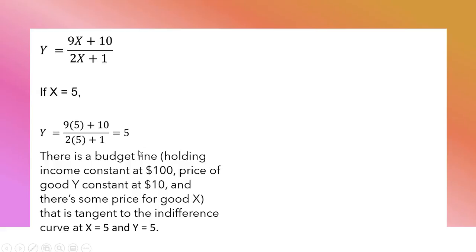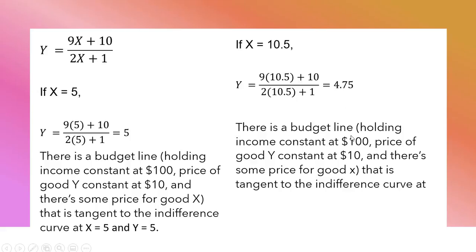Let's implicitly vary the price of good X. Now if X equals 10.5, so the price had to fall, consumers are buying more of good X. Plugging that 10.5 into the price expansion path, Y equals 4.75. In other words, there is a budget line holding income constant at $100, price of good Y constant at $10, and there's some price for good X that is tangent to the indifference curve at this combination, 10.5 and 4.75.